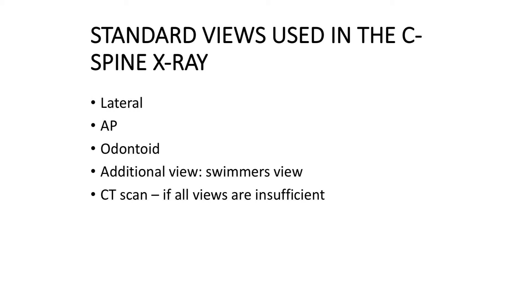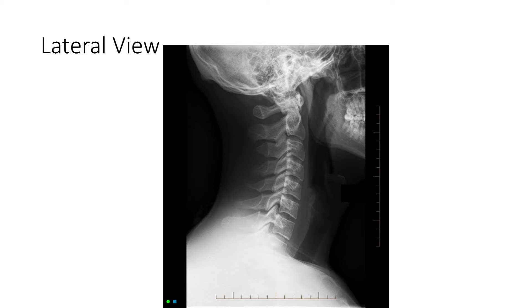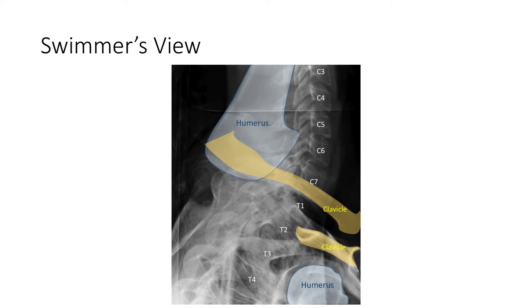We will start with an approach to the lateral view. Starting with the coverage, we have to make sure that all the vertebrae are visible, from the skull base to T1. If T1 is not visible, you can repeat the X-ray or obtain additional views such as the swimmer's view, which is an oblique image with humeral heads projecting away from the C-spine. Other views can be obtained by applying downward traction to the arms. If these multiple views do not show sufficient coverage, then a CT scan is indicated.